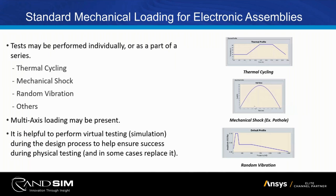I want to talk about the kinds of mechanical loading you're going to see in electronic assemblies. Common things flowed down from manufacturers to subcontractors include thermal cycling, which may occur in operating and non-operating conditions, mechanical shock from transportation or during operation, and random vibration, which falls into that same bucket.